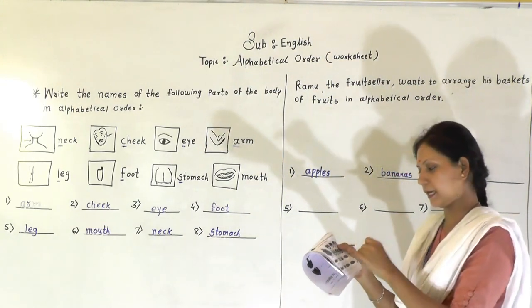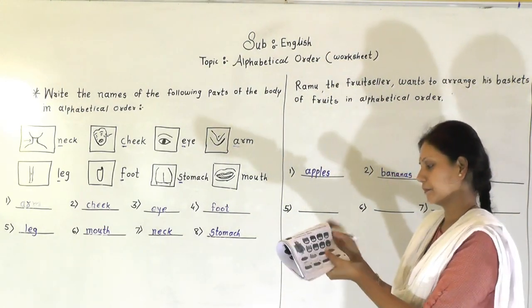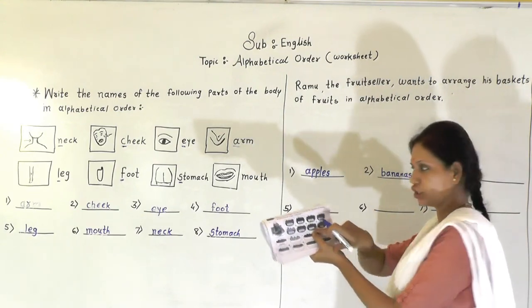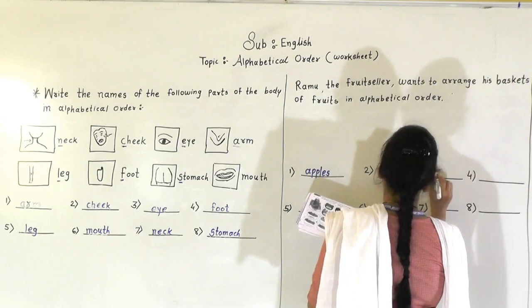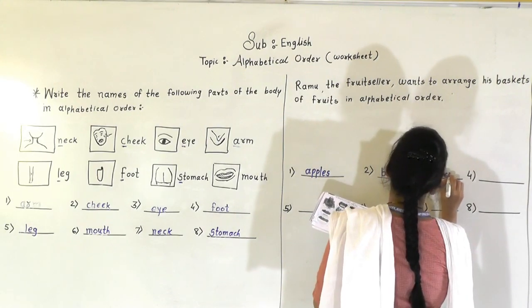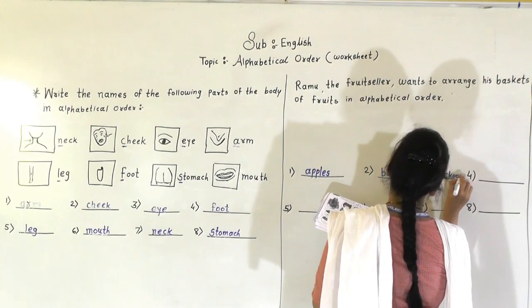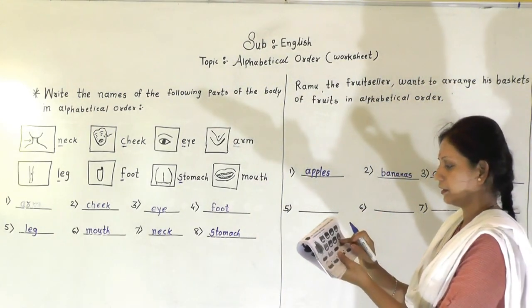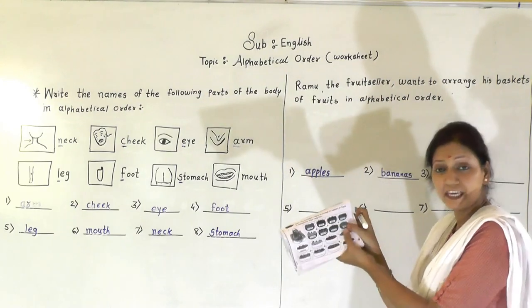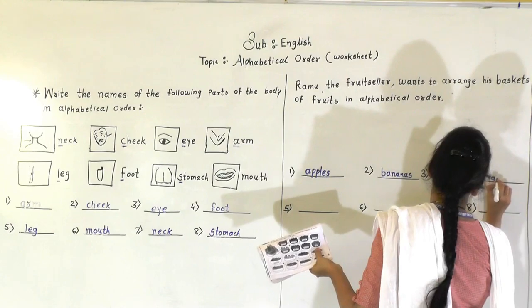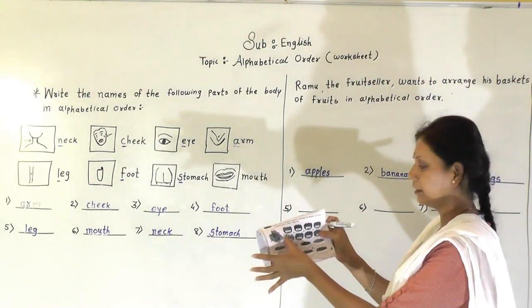Okay. Next is A, B, C. Chiku. Check your spelling, chikus. So C-H-I-C-K-O-S. Chikus. F, figs.